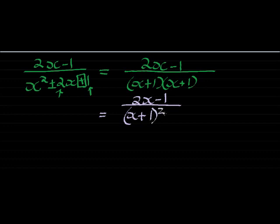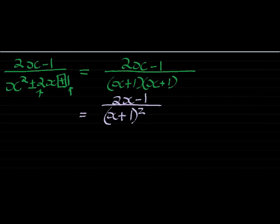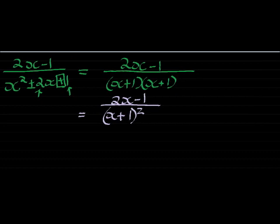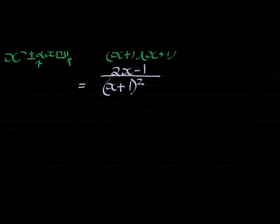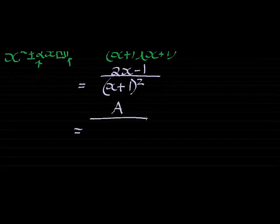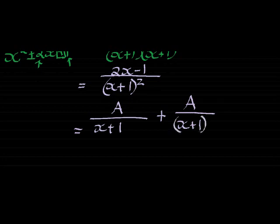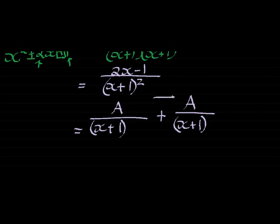Now, you need to remember that this time, it doesn't mean that I'm going to have A over x plus 1 plus A over x plus 1, because there's no reason why I couldn't have just added these two without using the square, which means that one of them had to have had a square.